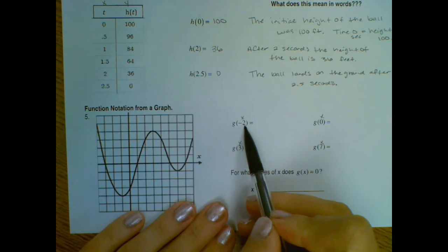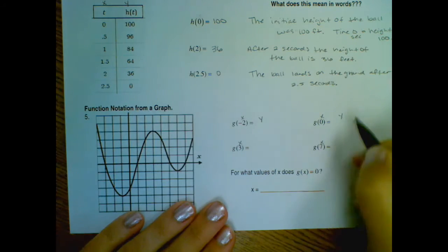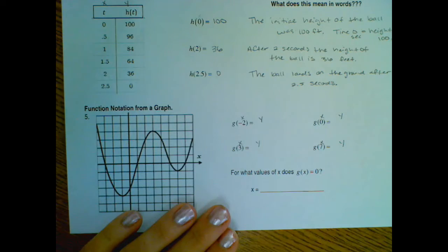So here, we want when x is negative 2, what's y? So it helps you put y above the blank space where we're going to write a number.